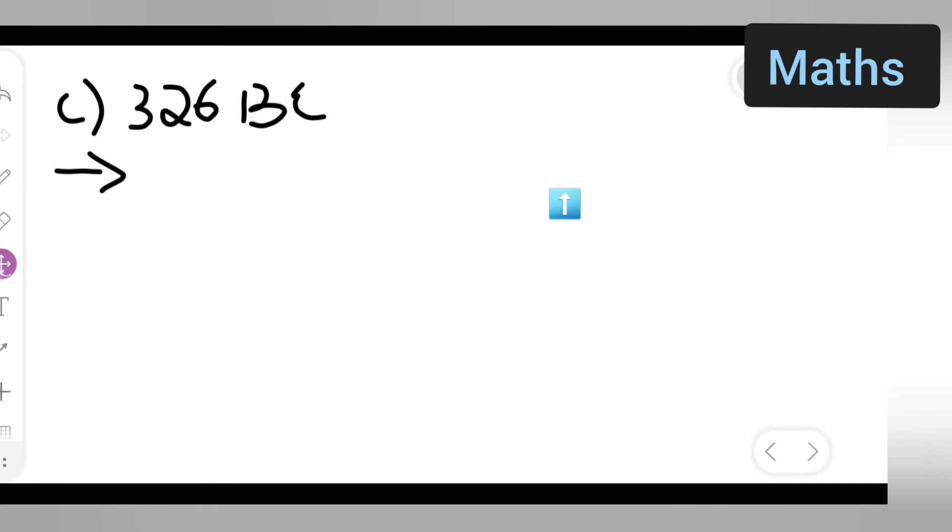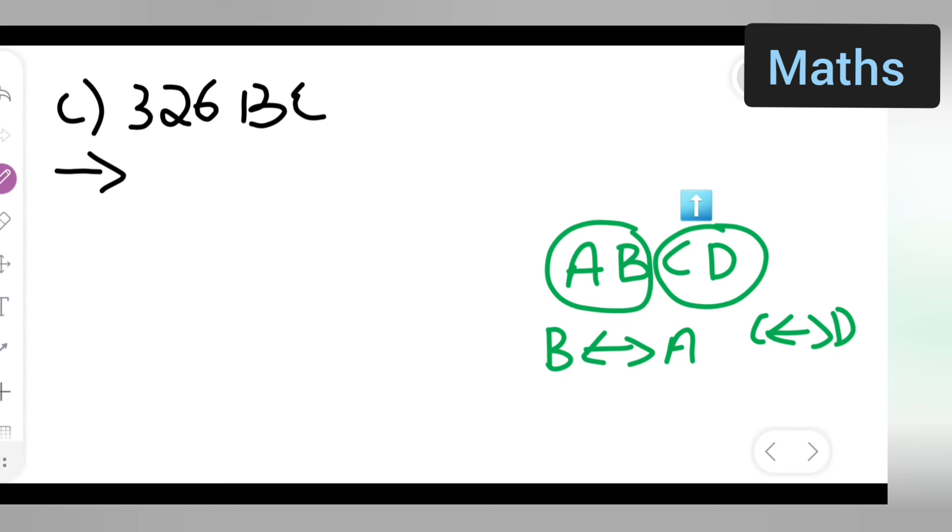Next, let us see opposite of 326 BC. When we write alphabet, it will be A, B, C, D. So opposite of B will be what? Opposite of B will be A. And opposite of C will be what? D, right. So write down 326 AD.